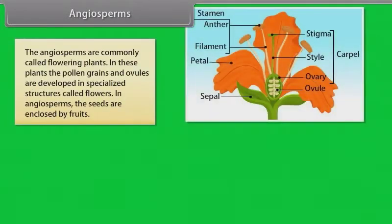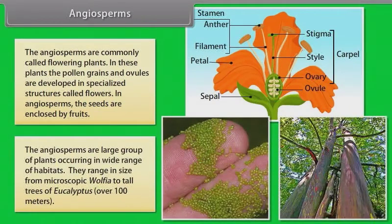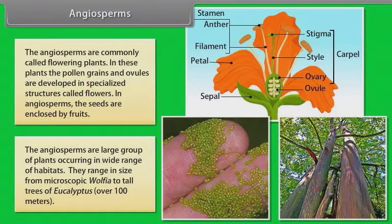Angiosperms are commonly called flowering plants. In these plants, the pollen grains and ovules are developed in specialized structures called flowers. In angiosperms, the seeds are enclosed by fruits. They are a large group of plants occurring in a wide range of habitats, ranging in size from microscopic Wolffia to tall trees of Eucalyptus over 100 meters.